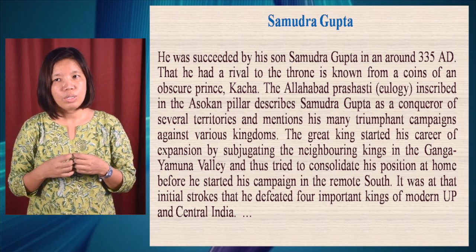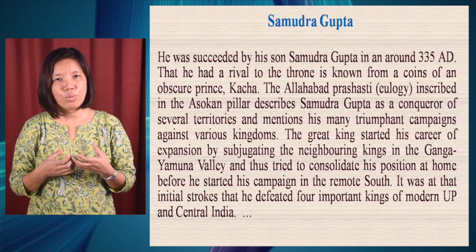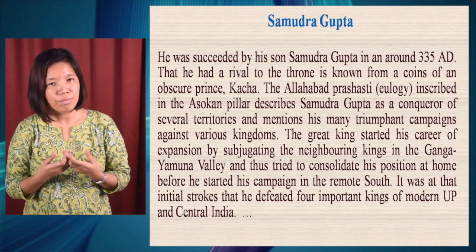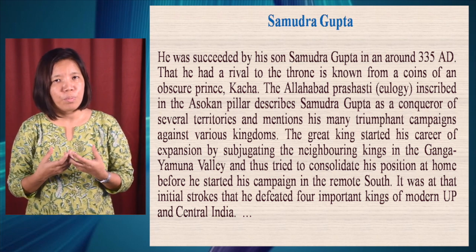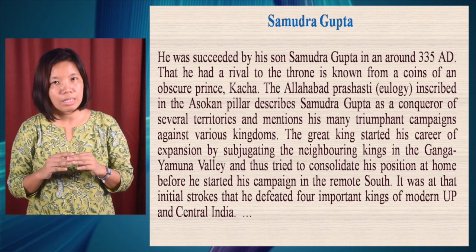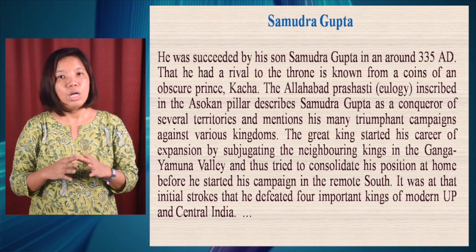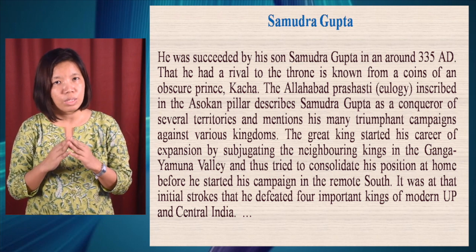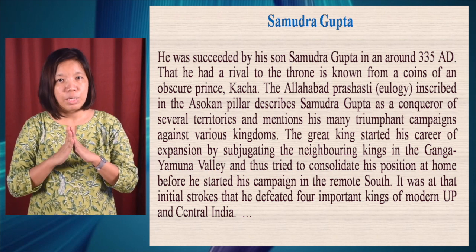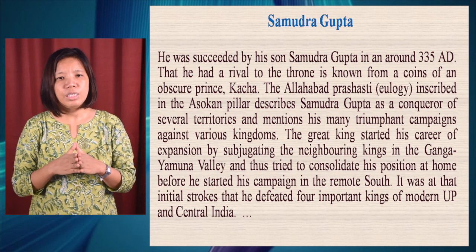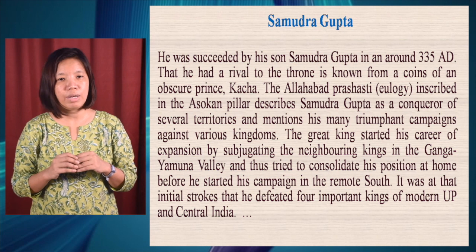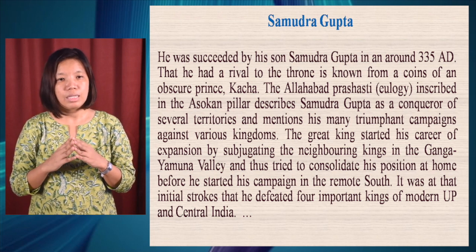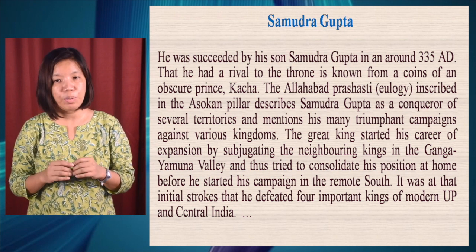The Allahabad Prashasti tells us that Samudragupta's accession to the throne was somehow mysterious. It seems he had a rival to the throne and had to overcome him. A coin of an obscure prince by the name of Kaccha was found, and this itself is evidence that Samudragupta had to fight his way to the throne. Samudragupta started his career of expansion during which the expansionist policy of the Guptas began. He started by subjugating neighboring kings in the Ganga-Yamuna valley, consolidating his position at home before campaigning in the remote south, initially defeating four important kings of modern UP and central India.